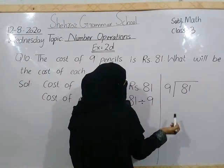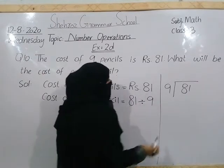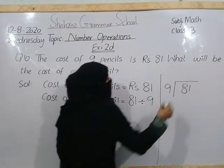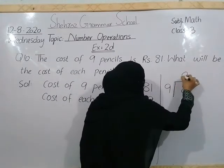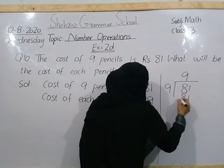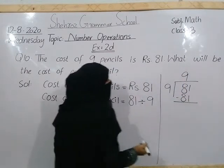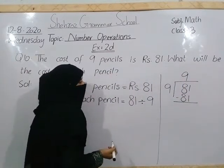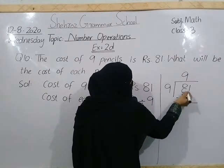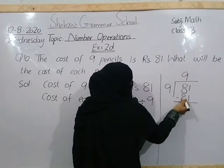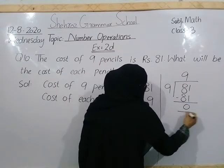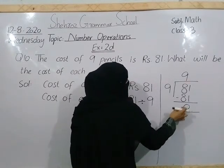तो 9 की table में 81 आता है — 9 nines are 81. अब 1 में से 1 subtract करेंगे, remainder 0 होगा. 8 में से 8 subtract करेंगे, remainder 0 होगा. ठीक है? तो हमारे remainder 0 आया.